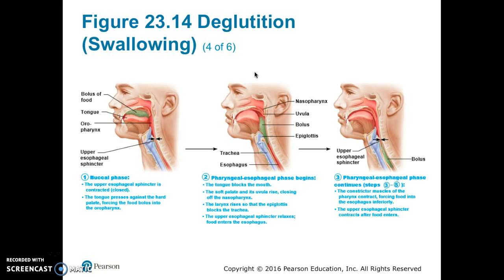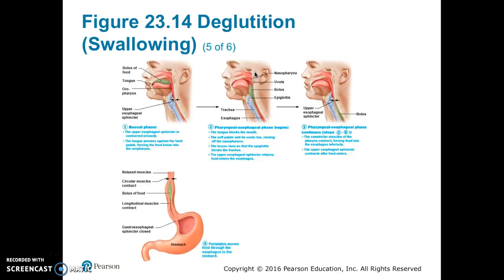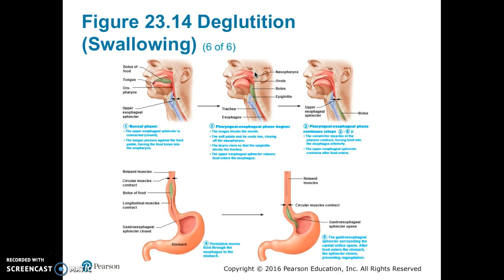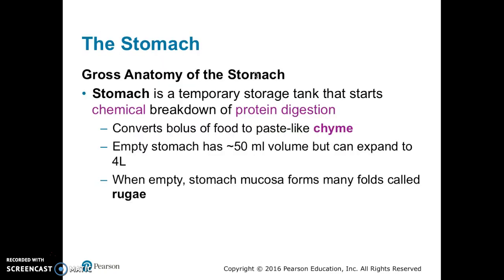The upper esophageal sphincter contracts after the food enters. Peristalsis moves food through the esophagus to the stomach — the circular and longitudinal muscles contract appropriately to cause peristalsis. The esophageal sphincter surrounding the cardiac orifice opens after food enters the stomach, then closes, preventing regurgitation.